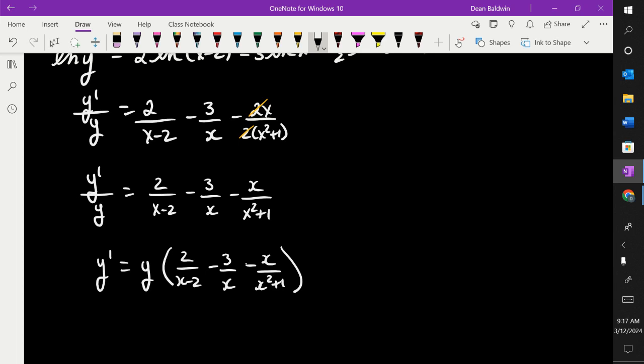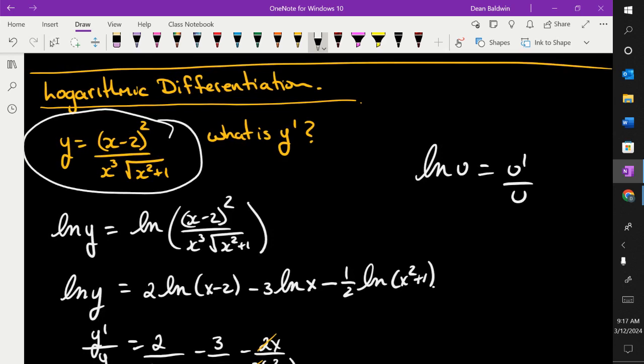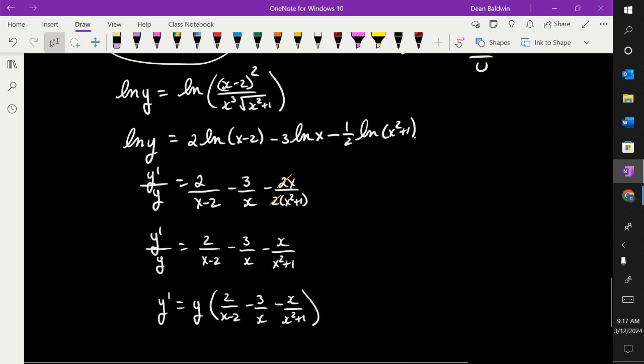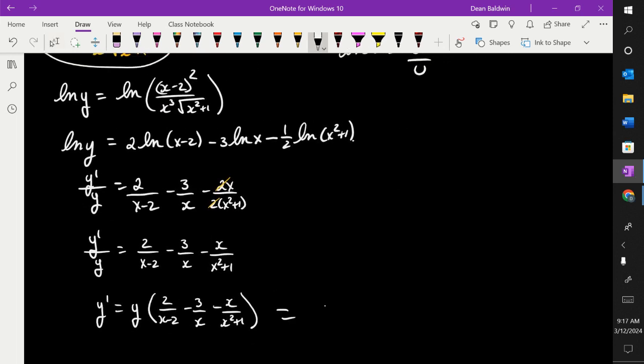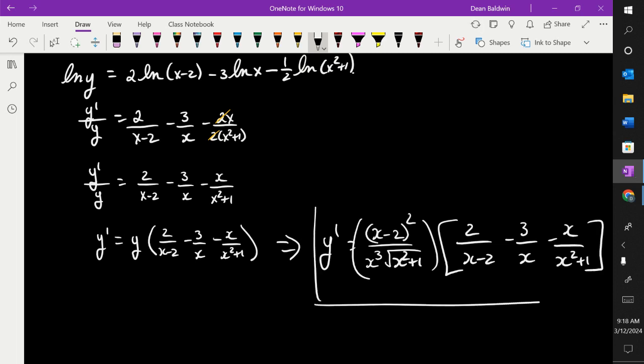What's y equal to? That thing. So all you have to do, I'm not asking you to simplify it, is you just have to put that in front so you get y primed is equal to, instead of writing y, we write the original equation, x minus 2 squared over x cubed, x squared plus 1 times all this stuff. And that's your answer. You can leave it like that.